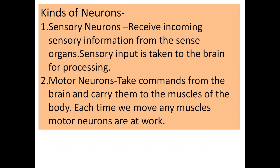There are different types of neurons. Sensory neurons receive incoming sensory information from the sense organs, and the sensory input is taken to the brain for processing. Motor neurons take commands from the brain and carry them to the muscles of the body — each time we move any muscle, motor neurons are at work. Whatever sensory input is received by the brain is through sensory neurons, and after processing, the brain gives commands to the motor neurons, which carry them to the muscles.